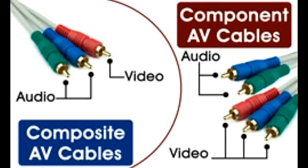Though the terms composite and component video sound similar, they actually represent two very different cable technologies that are used for interconnecting audio video devices. We shall find out what these technologies are and examine the main differences between these two cable types. Both component and composite video cables commonly use the same coaxial RCA connectors for connecting to various devices, which adds to the confusion that consumers already face while distinguishing between these two cable types.